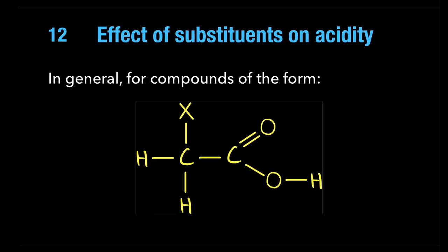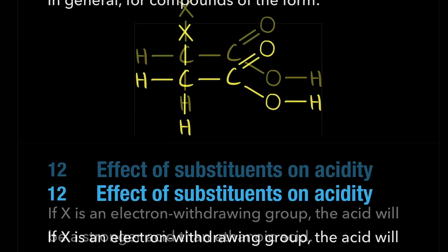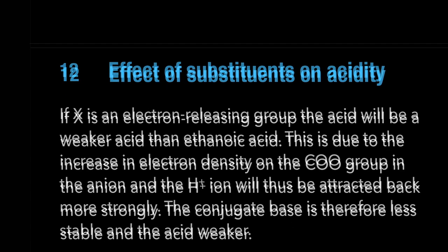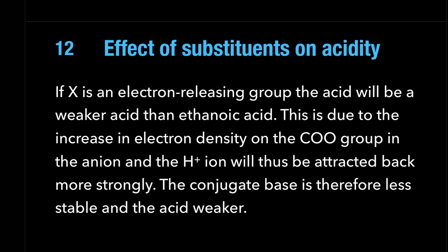General summary: if X is electron-withdrawing, the anion is more stable and the compound is more acidic. If X is electron-releasing, the anion is less stable and the compound is less acidic. If X is electron-withdrawing, it produces a stronger acid because the anion is stabilized. If X is electron-releasing like an alkyl group, the larger the electron-releasing effect, the less stable the anion.